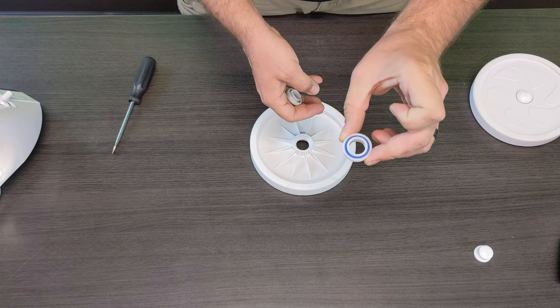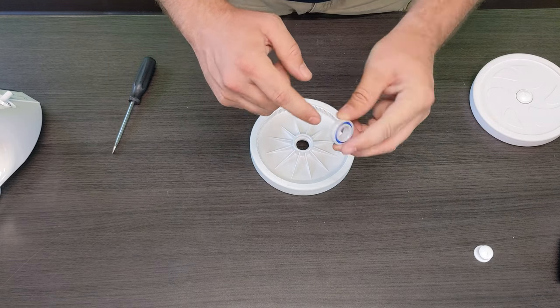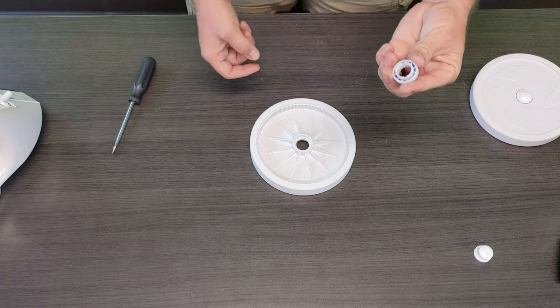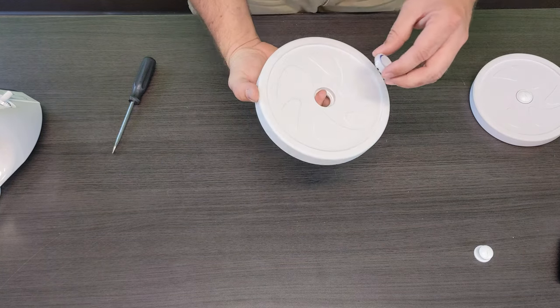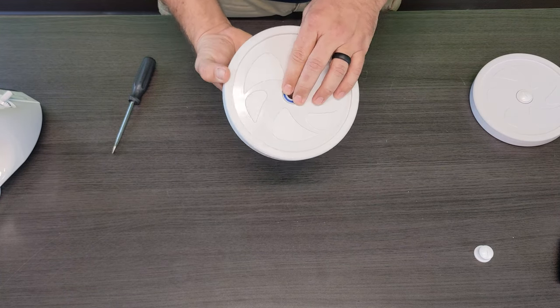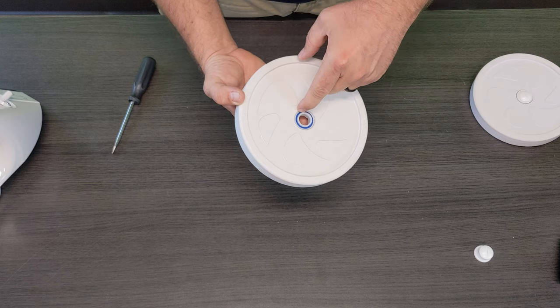So as you can see here on the bearing it's got a smooth side as well as a ridge side here with these two little notches. When you're installing your new bearings you do always want to make sure that the smooth side goes out. So the two notches always go in.